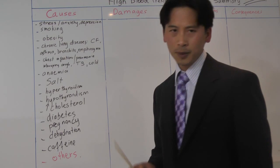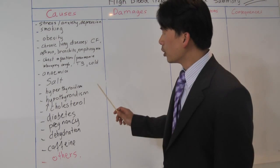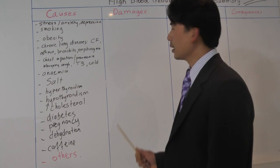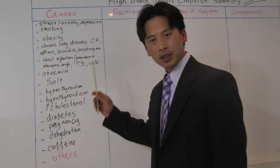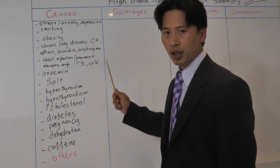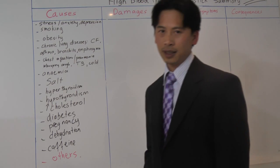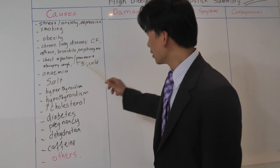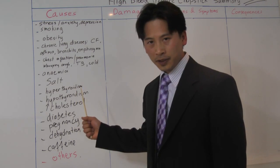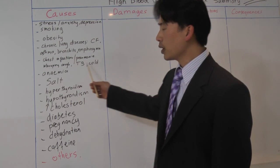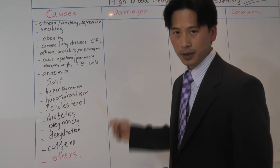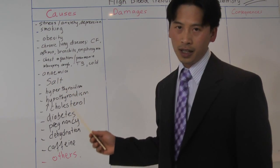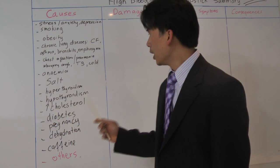So what are some of the causes for high blood pressure? Some of the causes include if you are stressed, if you have anxiety, if you have depression — that can lead to increased blood pressure. If you smoke, if you are obese or overweight. If you have a chronic lung disease like cystic fibrosis, asthma, chronic bronchitis, or emphysema. If you have a chest infection, pneumonia, whooping cough, tuberculosis, or even just a common cold. Also if you are anemic — if you have iron deficiency anemia or sickle cell anemia.